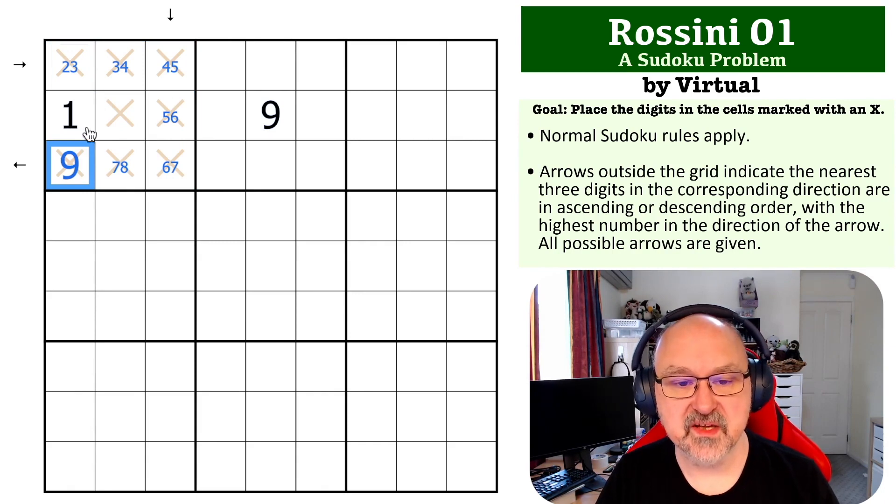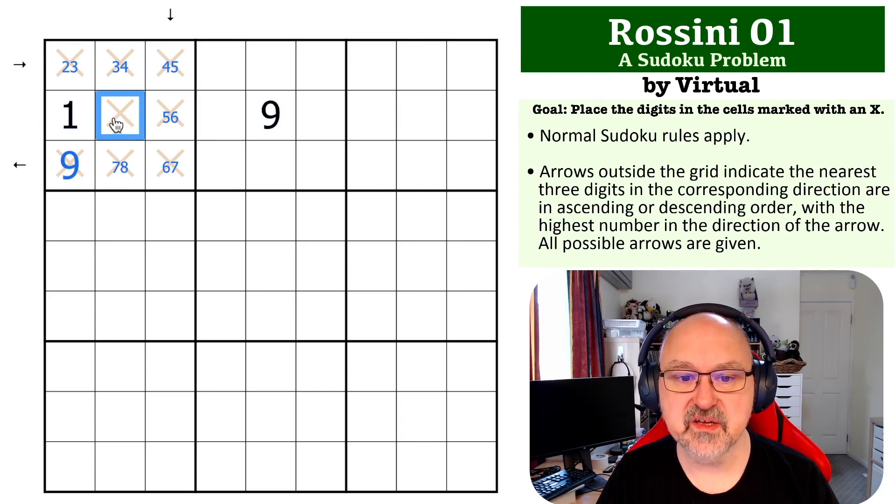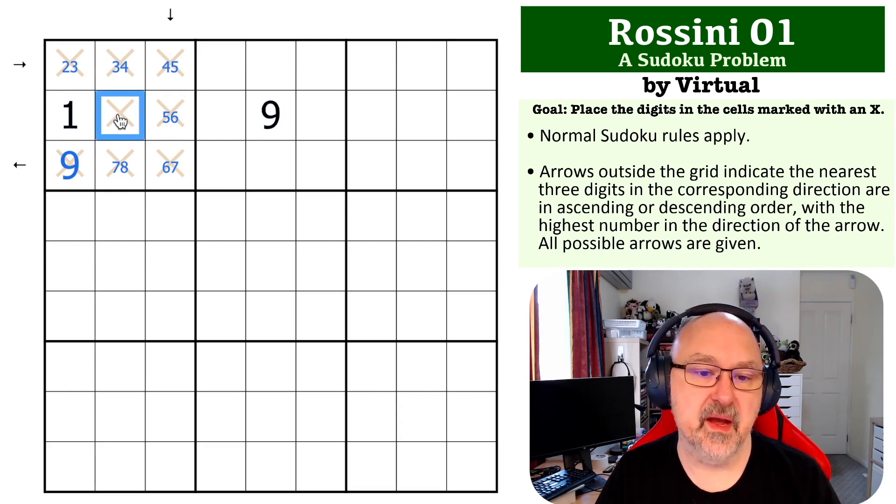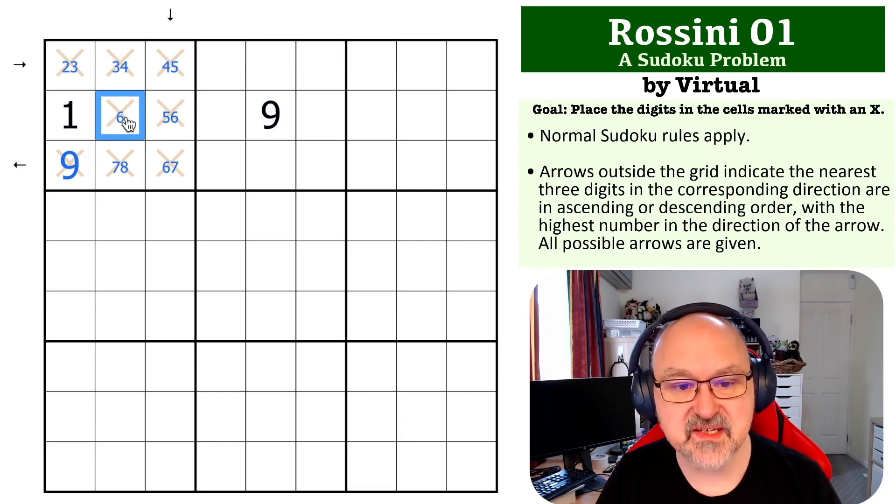Now, what we want to ask ourselves is, what can go into this cell? Because if this was to be lower than this, this would be valid, and we would need to have an arrow here. So this has to be higher than 5. If this was lower than 5, this could be a 5, and this would be valid. So this has to be 6, 7, or 8.